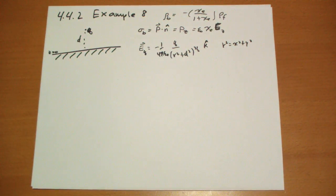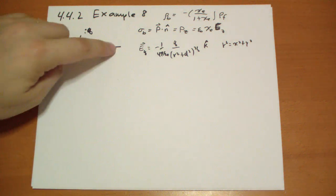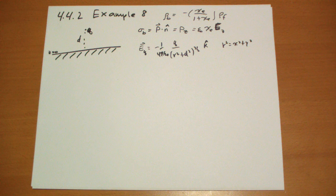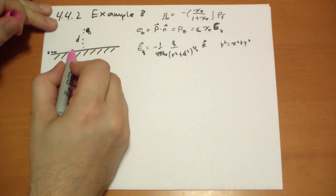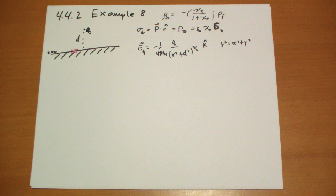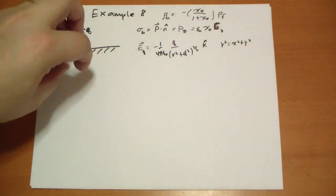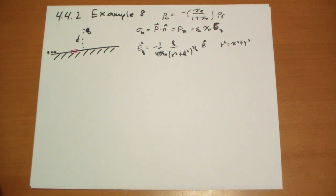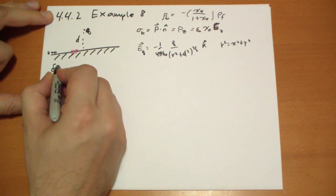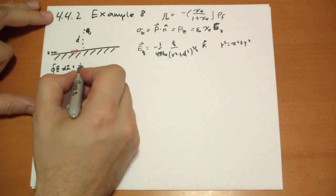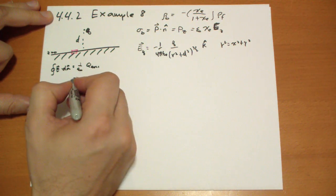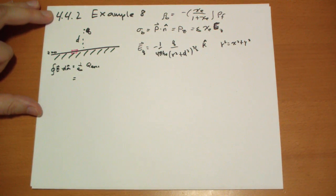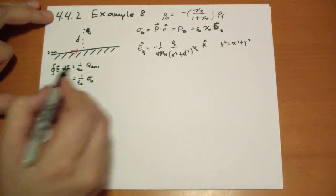The electric field due to the surface charge is easy to calculate using Gauss's law. We draw a tiny Gaussian surface — when you zoom in it looks like an infinite surface of uniform charge density. Gauss's law gives the integral of E dot dA equals 1 over epsilon-naught times the total charge enclosed. The charge enclosed is the area times the surface charge density sigma_b.